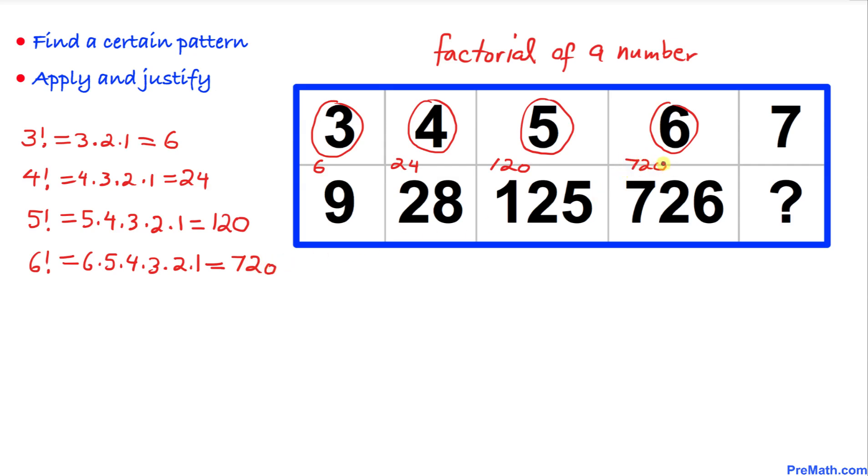And now we are going to be applying the same pattern for number 7. So 7 is going to be same thing: 7 times 6 times 5 times 4 times 3 times 2 times 1. And if we multiply out all these numbers we are going to be 5040. So let's write down 5040.